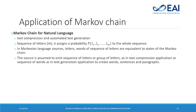The first application of Markov chain is in the prediction of natural language. This process includes text compression and automated text generation. Each letter has a certain probability of occurrence depending on the language and context, and these groups of letters form words, then sentences, and paragraphs.